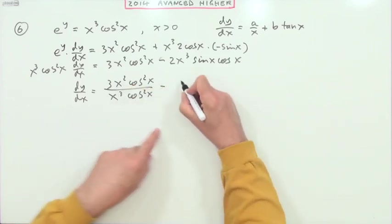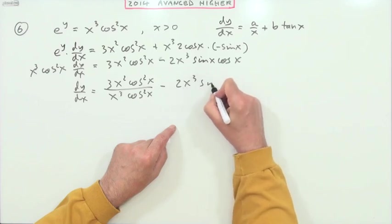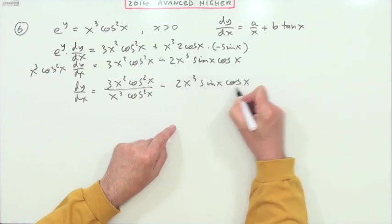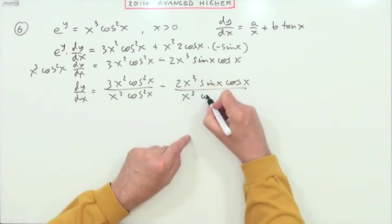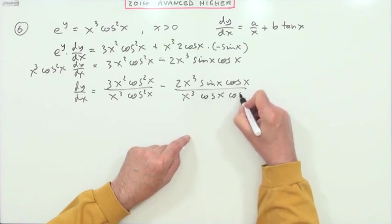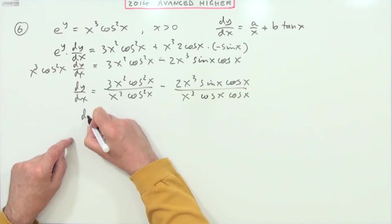Minus 2x cubed sin x cos x over x cubed. Maybe I'll just split it to emphasize - write cos squared x as cos x cos x so you can see quite clearly.